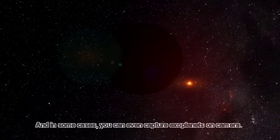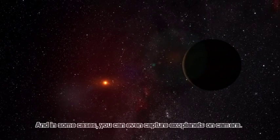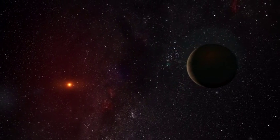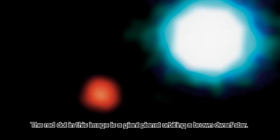And in some cases, you can even capture exoplanets on camera. In 2004, NACO, the adaptive optics camera on the Very Large Telescope, took the first image ever of an exoplanet. The red dot in this image is a giant planet orbiting a brown dwarf star.